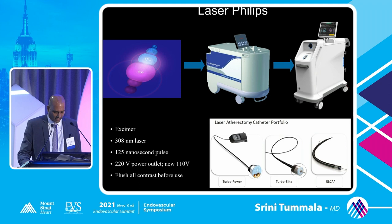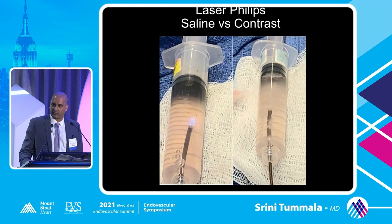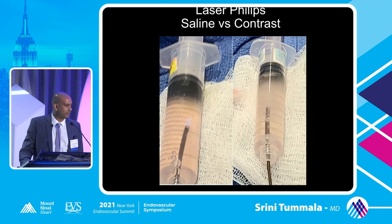The Turbo Power and Turbo Elite are the most common catheters used with the Philips system, but because of how it works you must flush out contrast before use. If you've done an angiogram, make sure the contrast is flushed — as shown here, on the left with saline the laser functions correctly, but on the right with contrast you get an explosive effect that can cause dissection, tearing, or perforation of an artery.